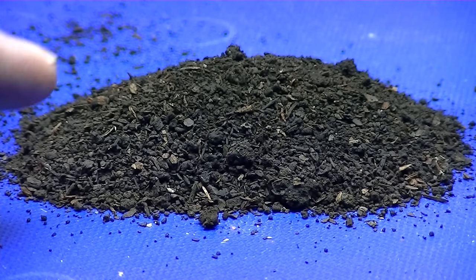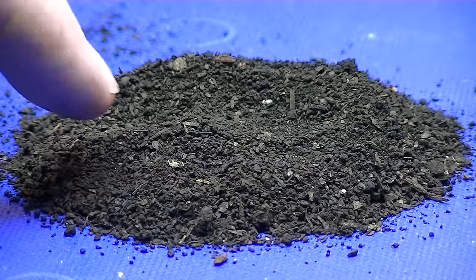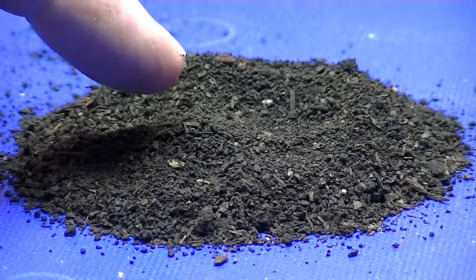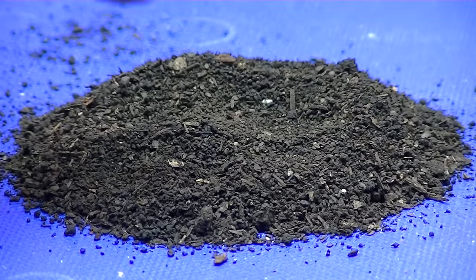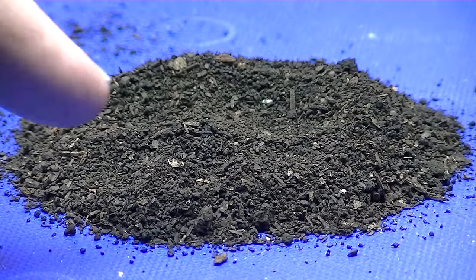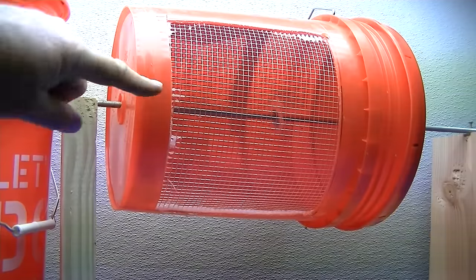So to achieve this—see how there's worm casting here and very little organic matter? That's the reason why you can store them, because you want to take the worm castings only. You don't want a lot of organic matter in there, and the way you're going to achieve that is by using a two-screen process.